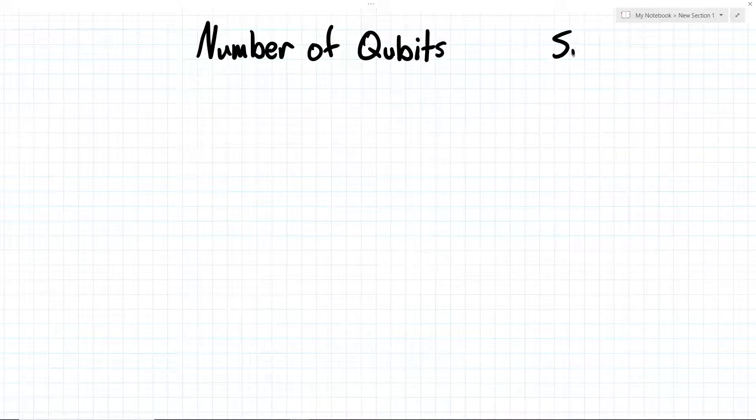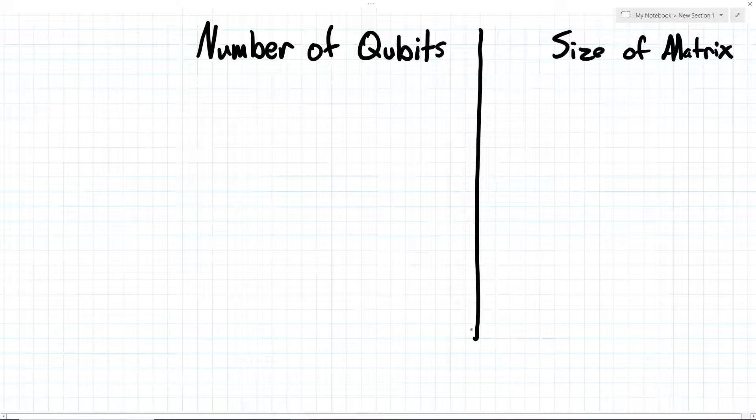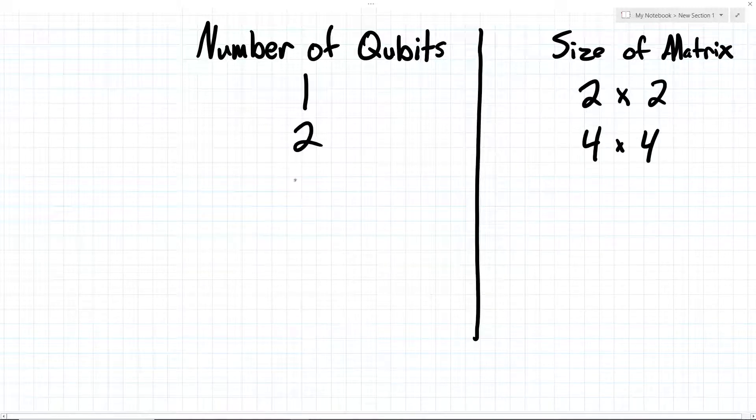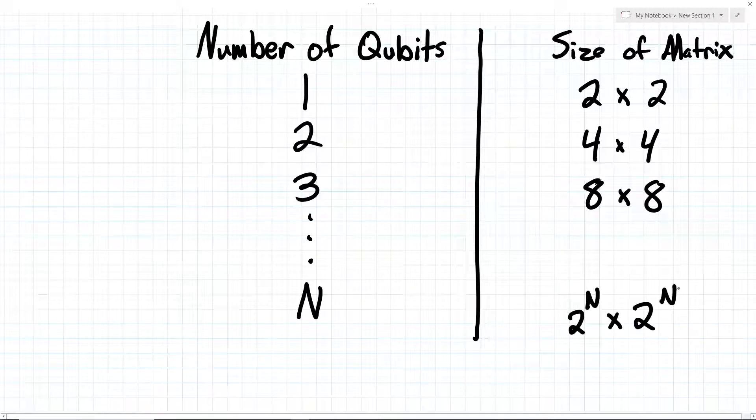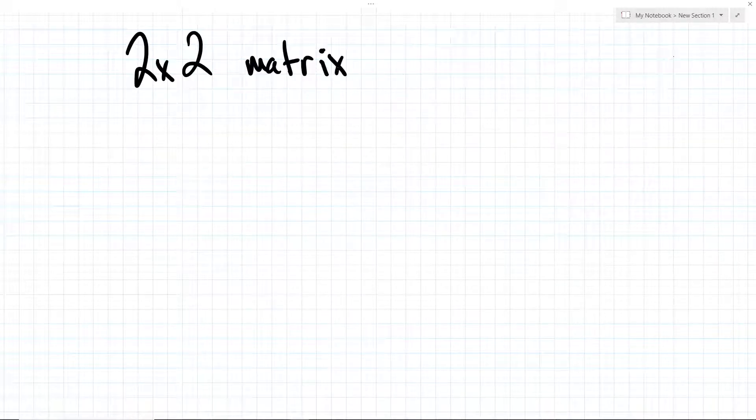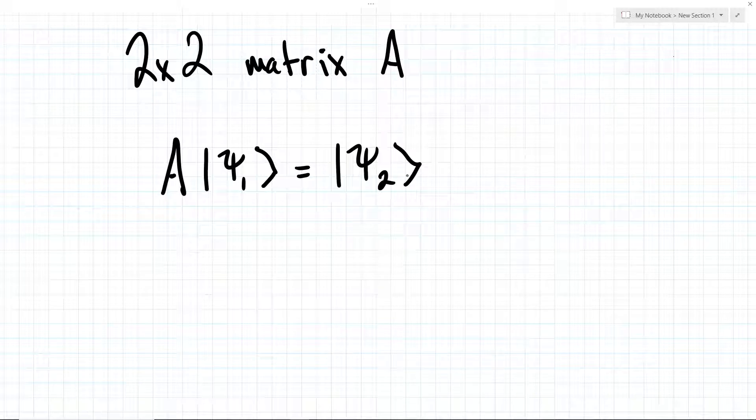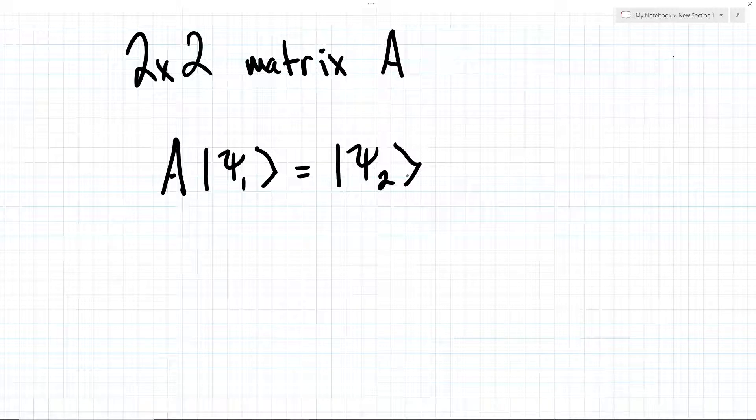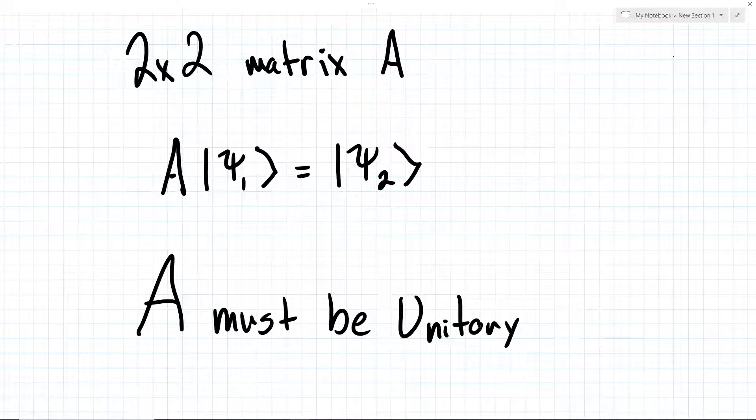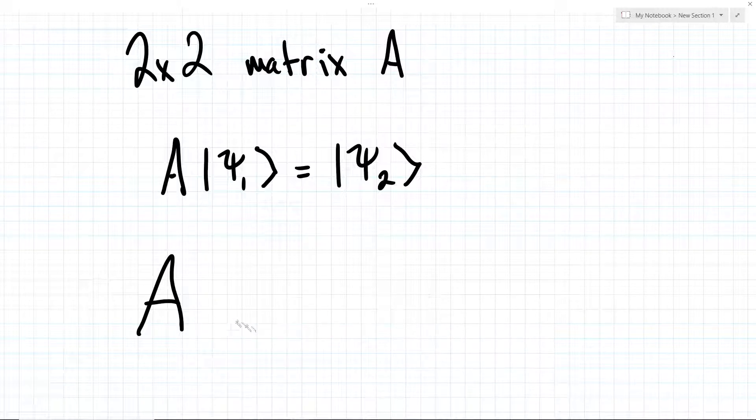In the abstract model of quantum gates, there are matrices of size 2 to the n by 2 to the n, where n is the number of qubits that the gate is acting on. Applying a gate to a qubit will change its state. We can calculate the change to a qubit state by multiplying the gate matrix with the current state vector.